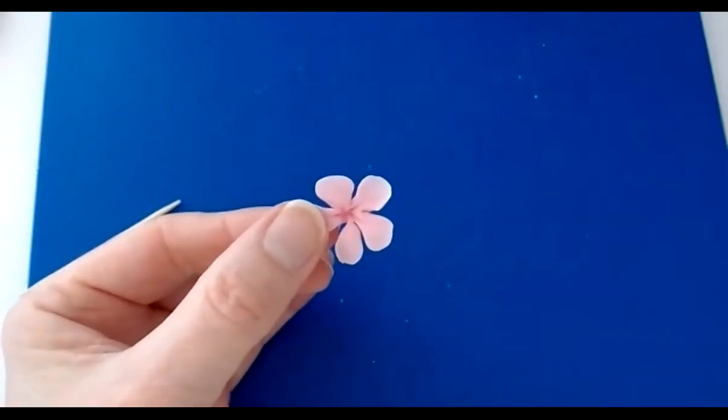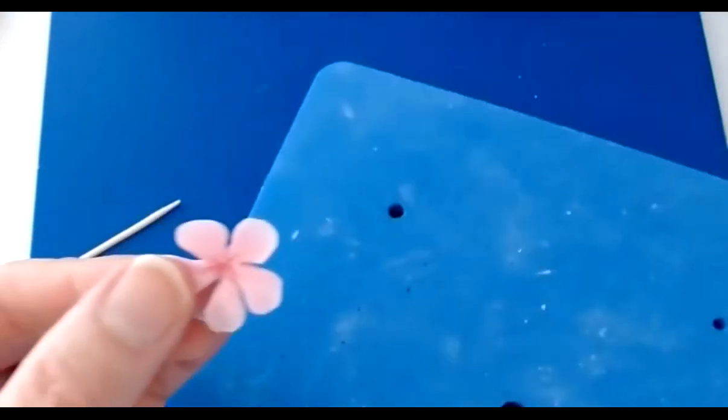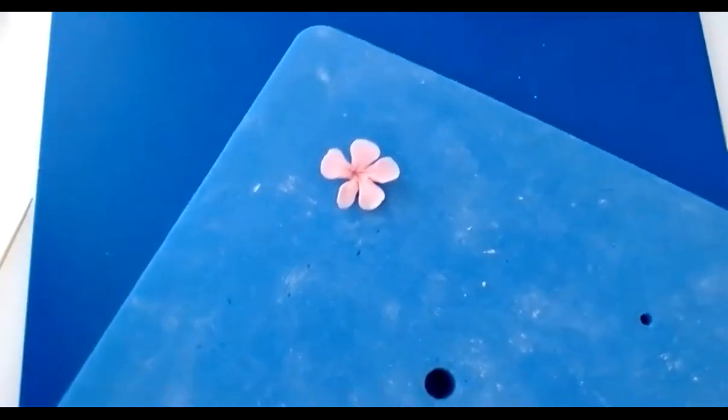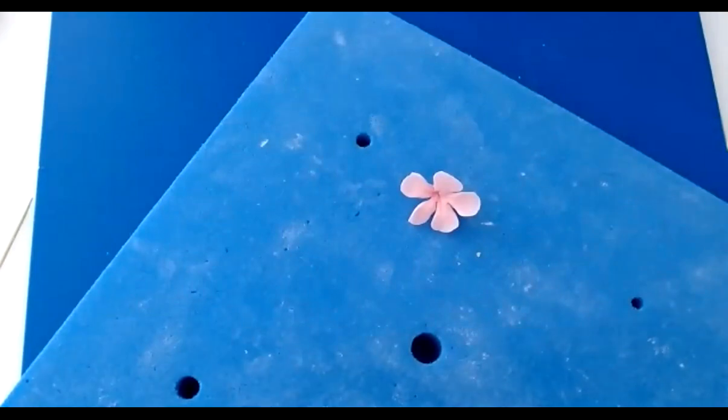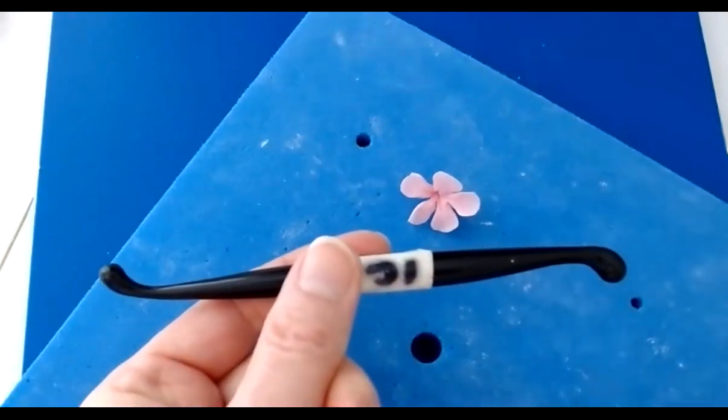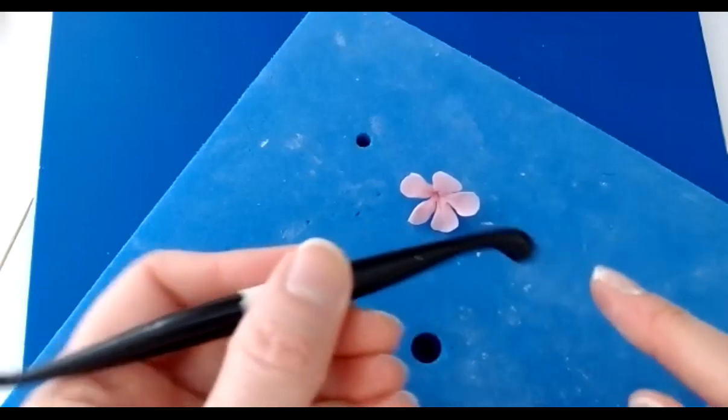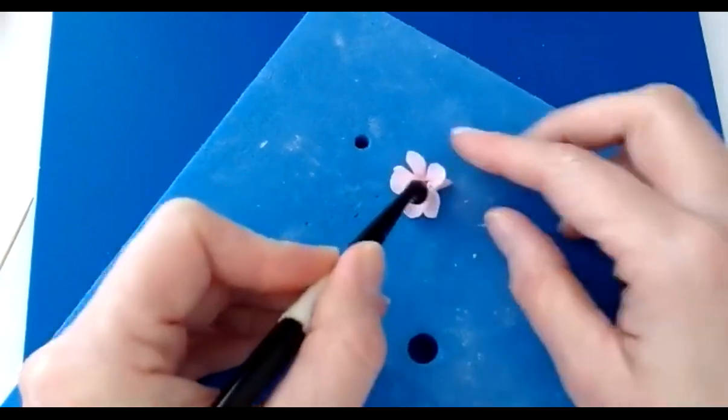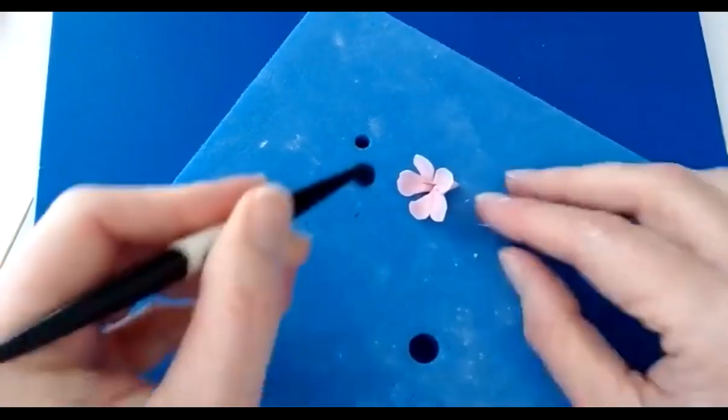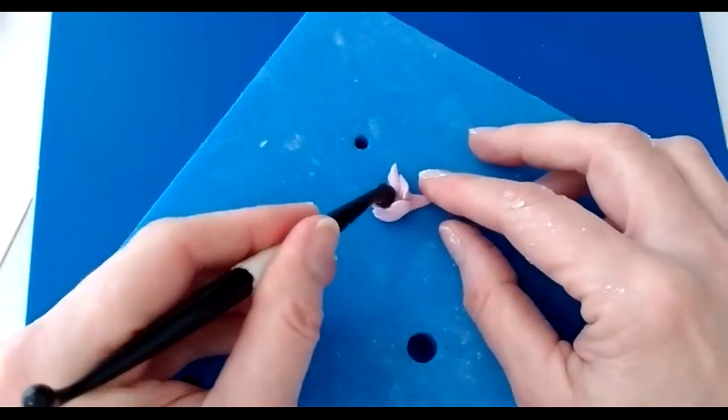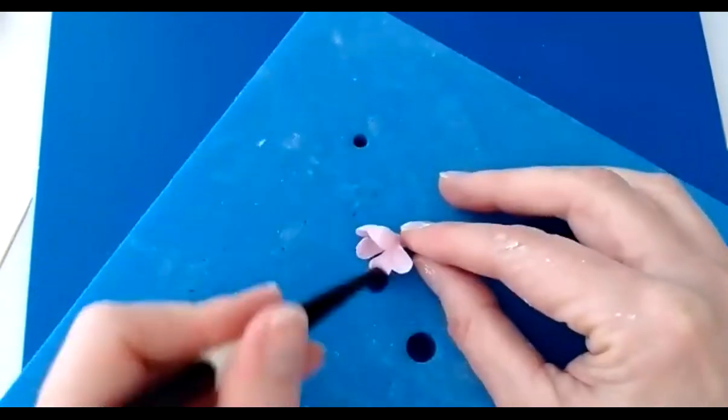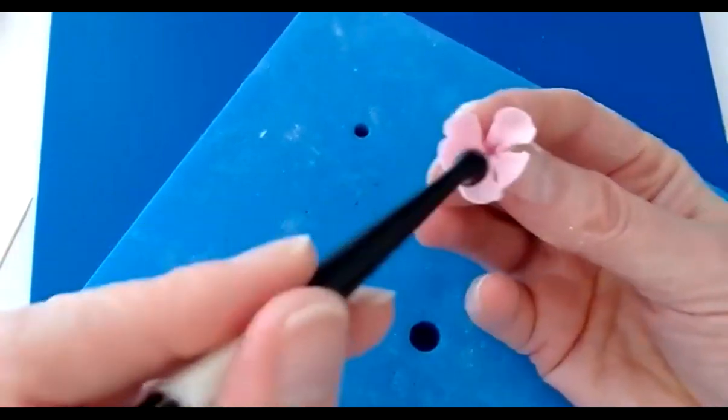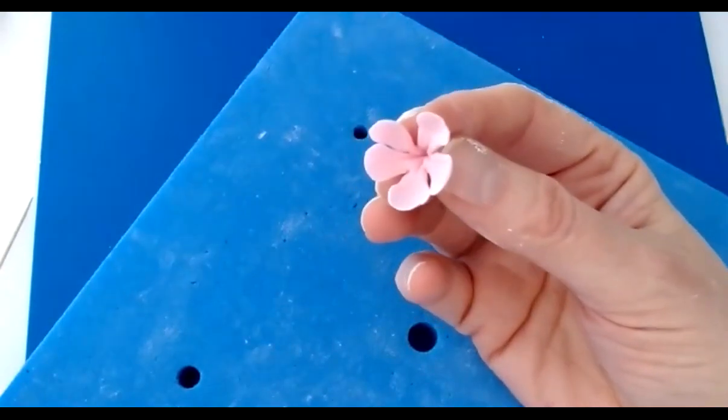Final preparation before we put the stamens in the center is to take a foam pad, drop this down into one of the holes or if you haven't got one with holes you can just pop it on the side. And then if you take a bone modeling tool, the fat end and press it facing down, which is an unusual way of using the tool because normally we use it this way up, and press each petal in turn. That will just give it a lovely little cup and make it look more blossom-like.